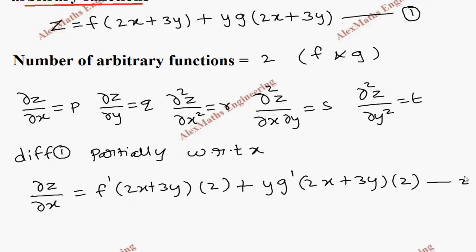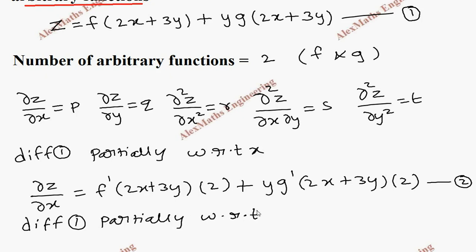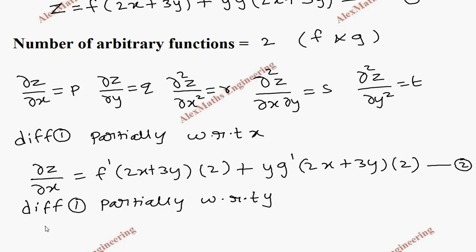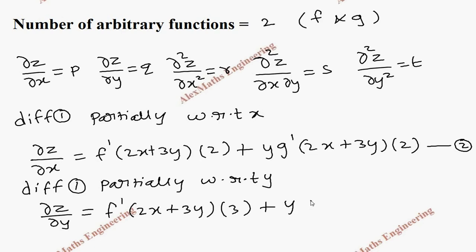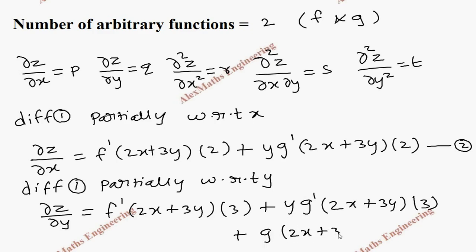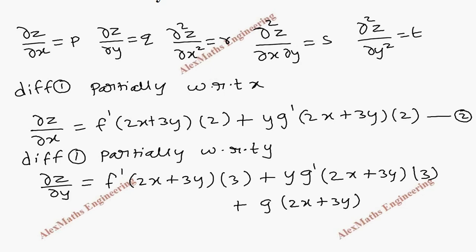Let's name this as the second expression. Now we again take the first expression and differentiate it partially with respect to y. So dou z by dou y equals f dash of (2x + 3y) into 3, as per the chain rule. Here we have to perform the product rule because we have a product of two terms. So y is written as it is, and g dash of (2x + 3y) into 3, plus g of (2x + 3y) and y differentiation is 1. Let's keep this as the third expression.